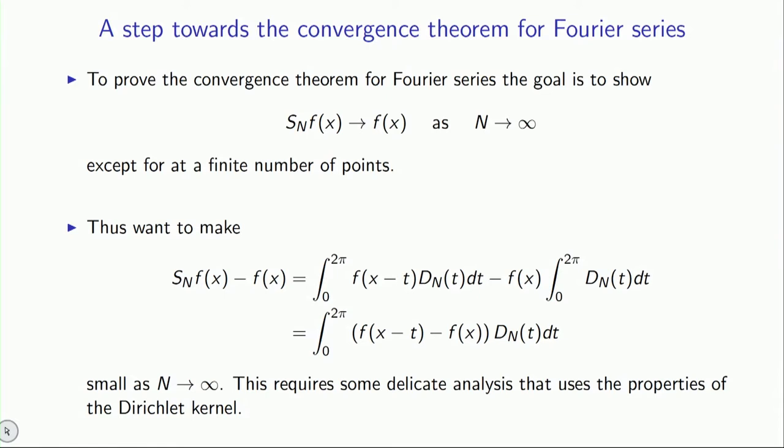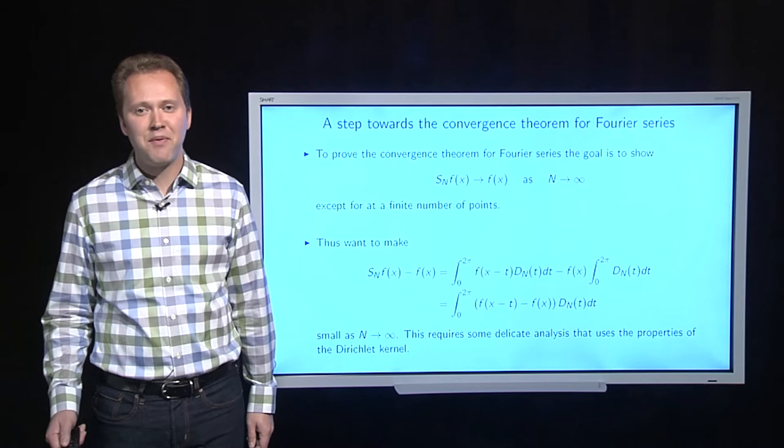the integral of the Dirichlet kernel is 1. So instead of writing just 1, I can write integral of the Dirichlet kernel. Now, f of x that is outside the integral can come inside, and you can combine the integrals into one expression where you're looking at the difference between f of x minus t and f of x, and you're multiplying this with the Dirichlet kernel. This turns out to be a key observation in proving the convergence result.